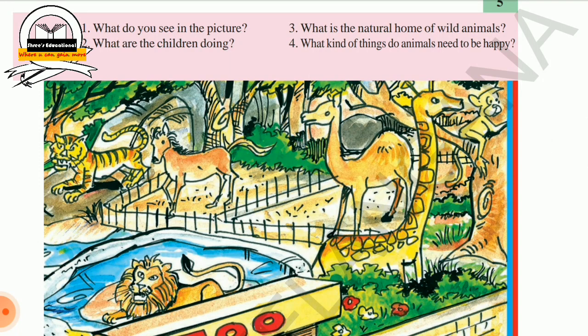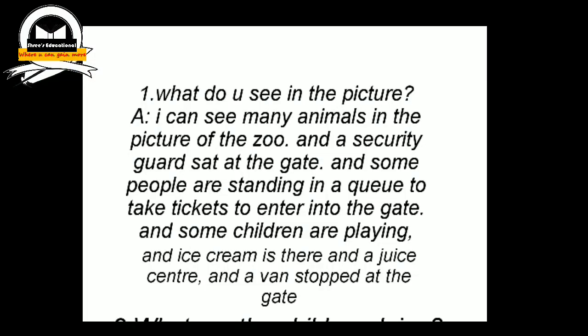The first question is: What do you see in the picture? The answer is: I can see many animals in the picture of the zoo. A security guard is seated at the gate, and some people are standing in a queue to take tickets to enter the gate. Some children are playing, there is an ice cream stall, a juice center, and a van stopped at the gate.